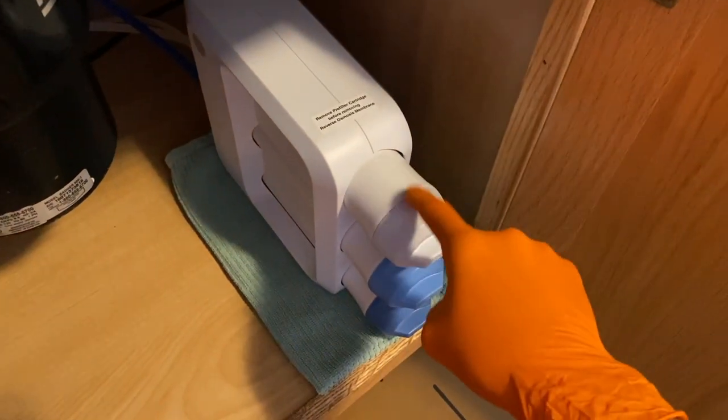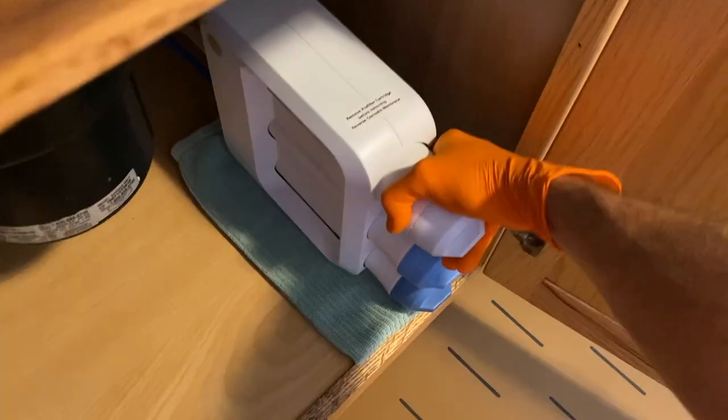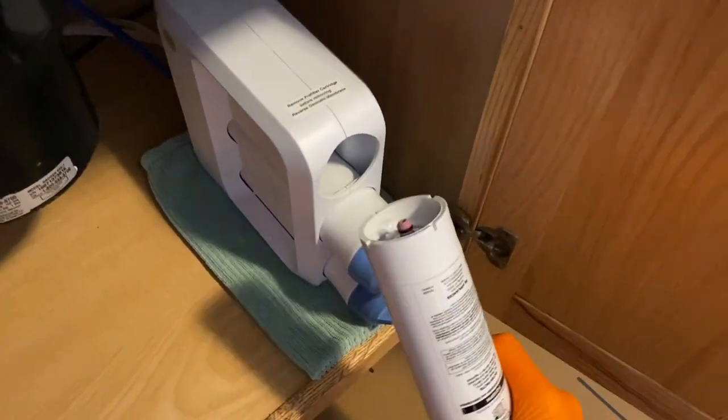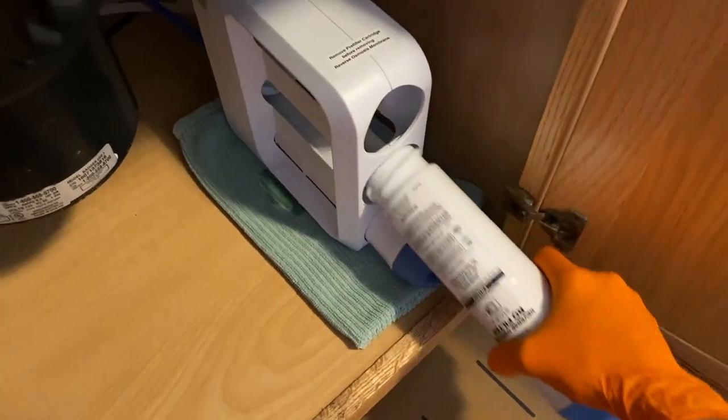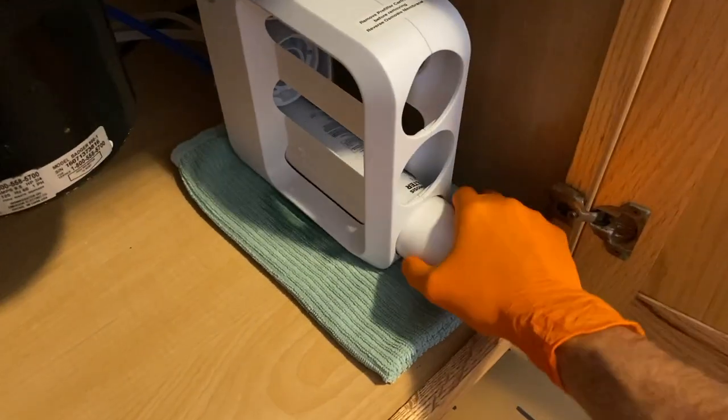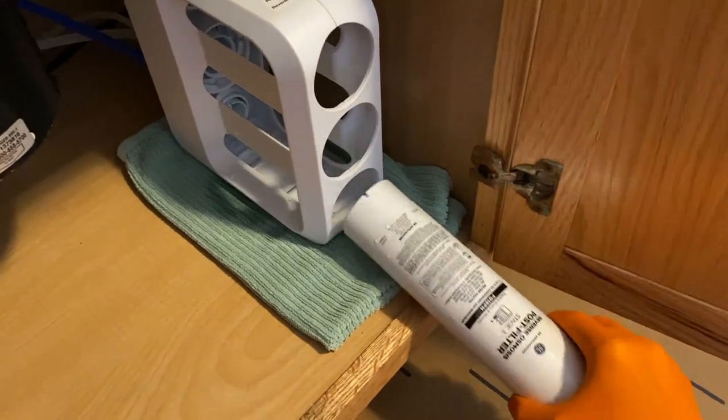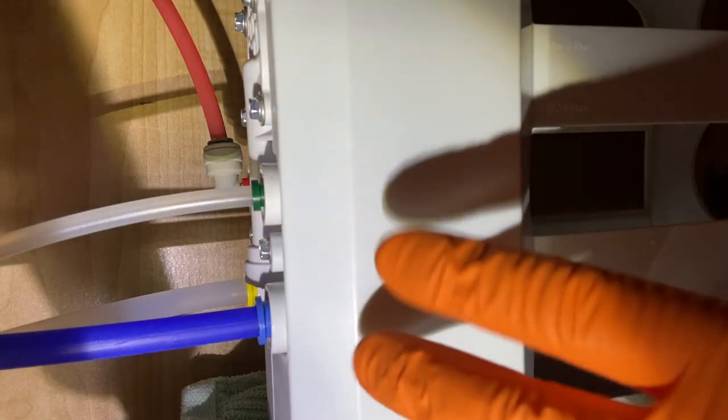I'm going to remove the top pre-filter, and I will set that in the sink. Next remove the membrane, as you can see it's leaking a bit, and finally the bottom post filter.